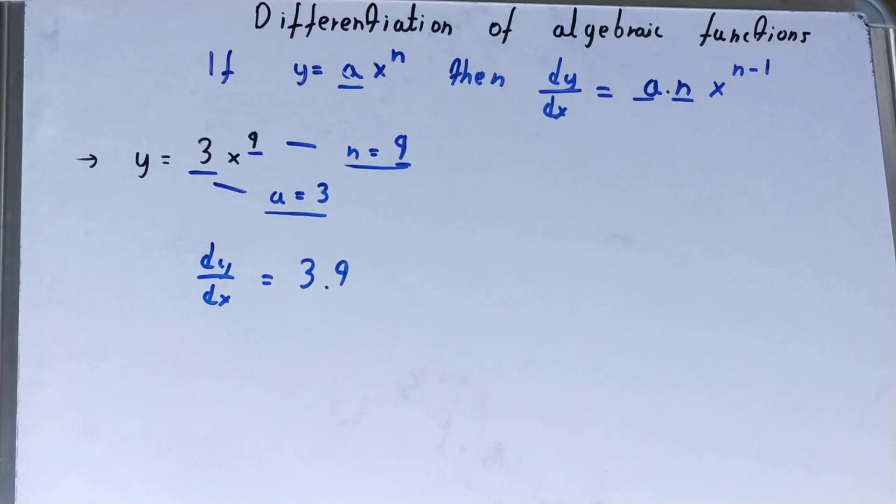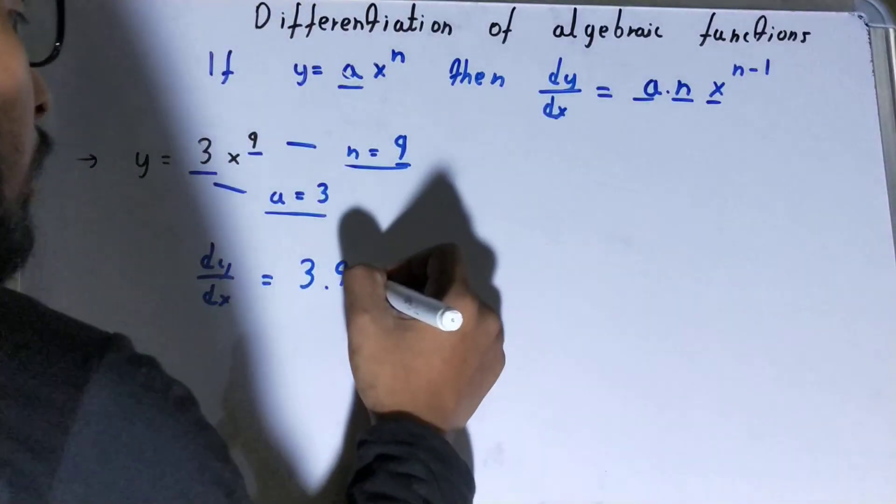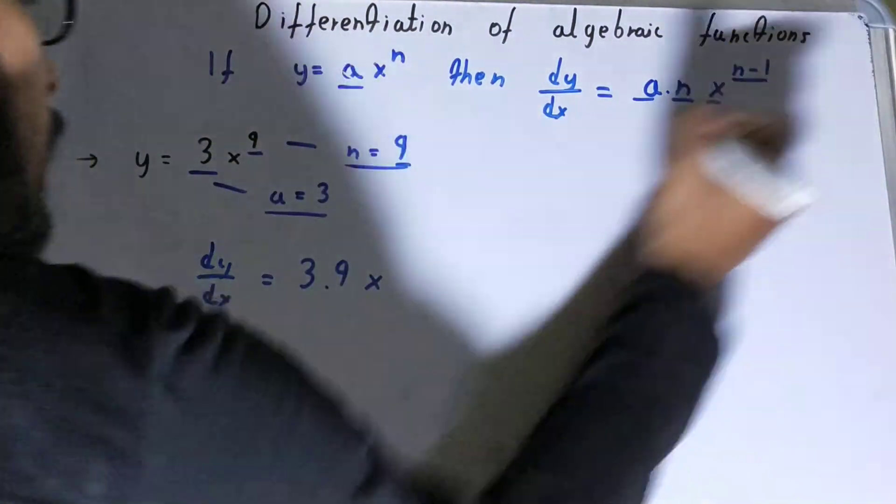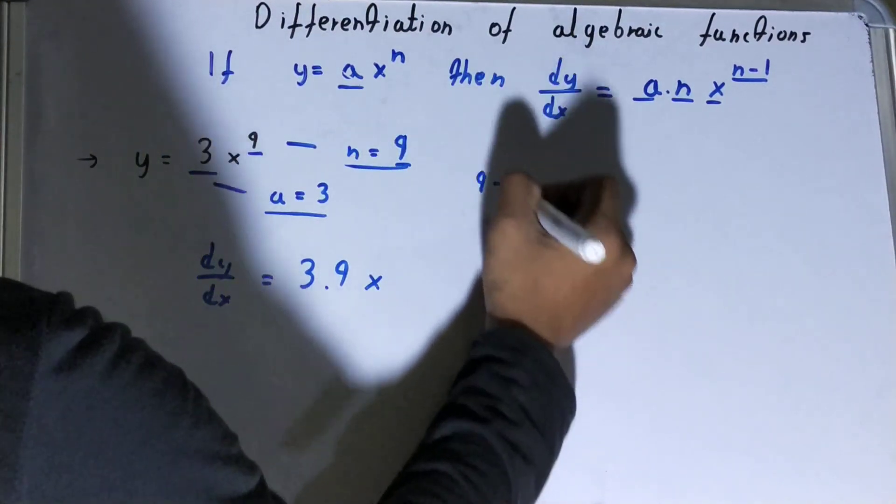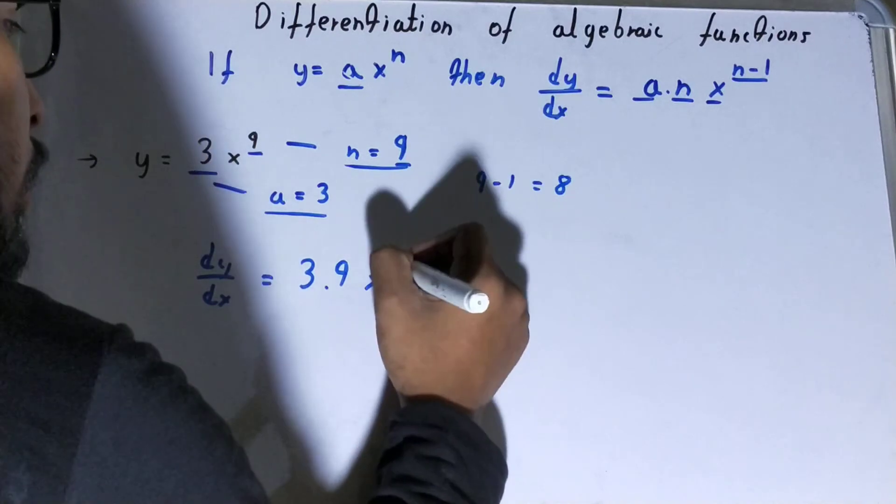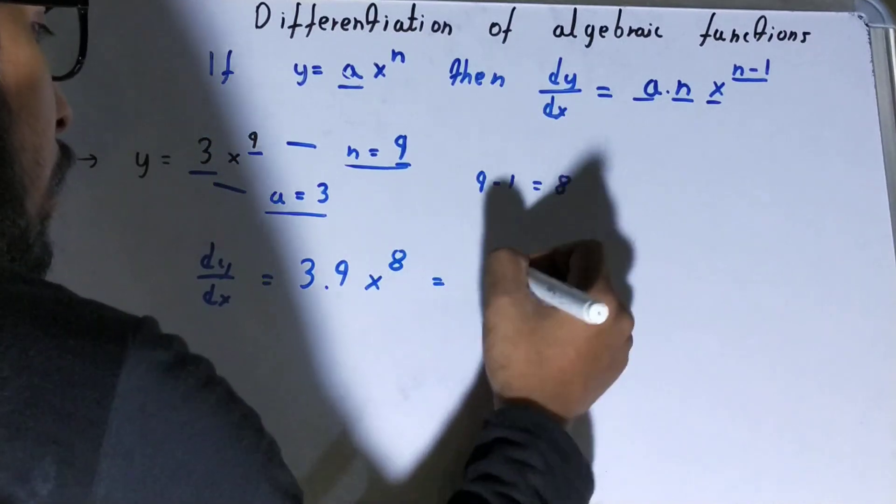Then we have to write x. In the power, we have to write n minus 1. So our n is 9, and 9 minus 1 is 8, so you write 8.